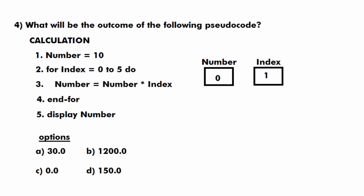On the next iteration the expression becomes number = 0 * 1. Since multiplying any number by 0 gives 0, we can directly conclude that the value of number after the entire for loop will remain 0. So the output is 0.0, which is option C.